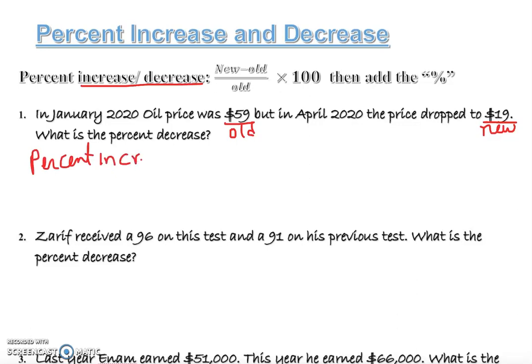Percent increase equals new minus old. Clearly, what is our new? New is 19 minus old is 59 over the old, in this case is 59, times by 100. If you do so, you can use a calculator or just do simple math. It's going to give you negative 40. This is going to give you 19 minus 59, which is negative 40 over 59 times 100.